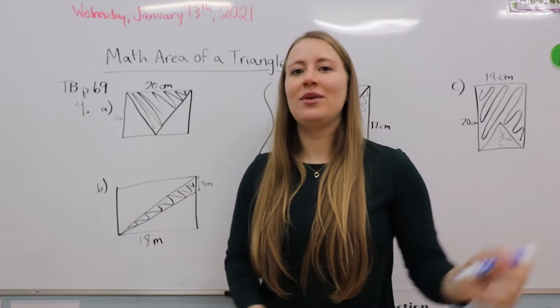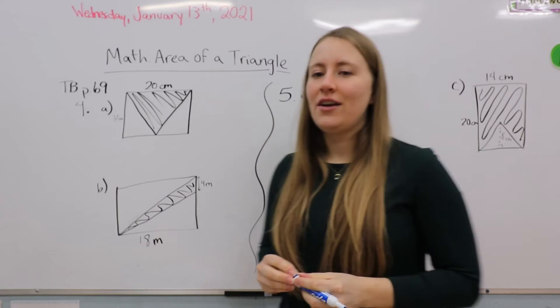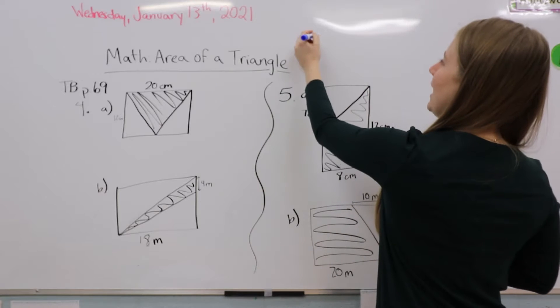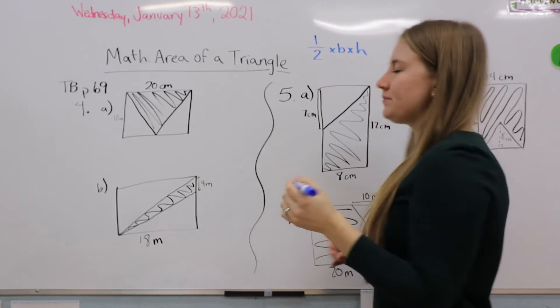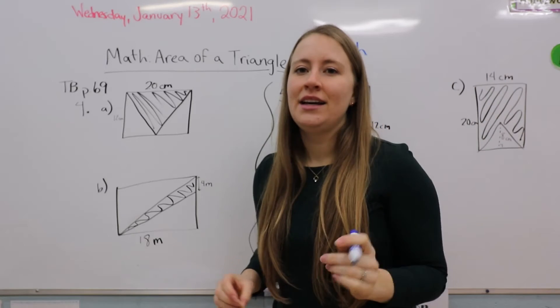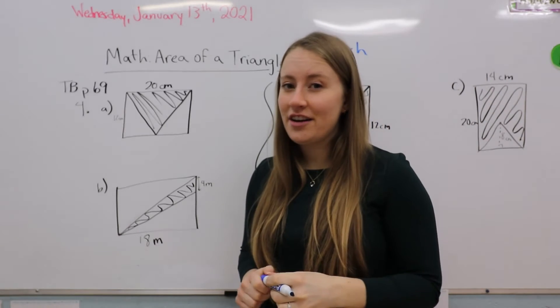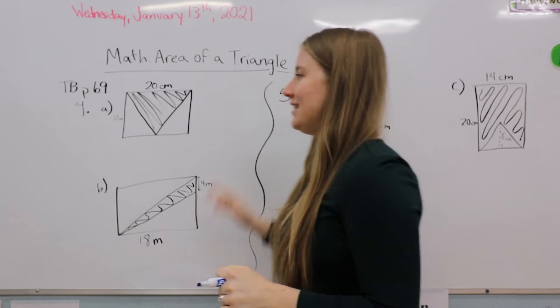In question 4, the shaded area of the rectangle is actually just a triangle, and we're just finding it within the rectangle. You'll remember that our formula is half times base times height. You can have your anchor chart in front of you.